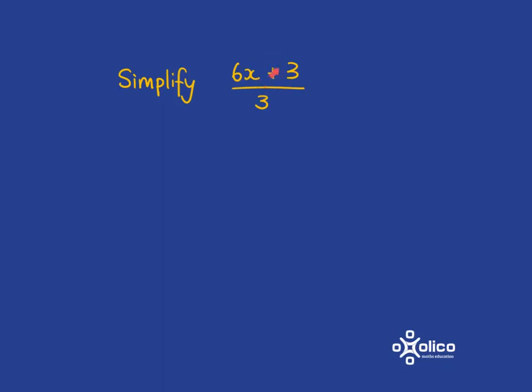you would have looked and said, we've got a plus, and so we can't just cancel. We could use the distributive law, which you did a bit of in grade 8, and say 3 divided into 6x goes 2x, and 3 divided into 3 goes once, so you'd be left with 2x + 1.